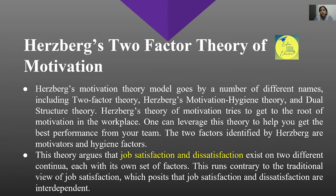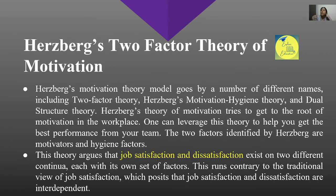This theory argues that job satisfaction and dissatisfaction exist on two different continua, each with its own set of factors. Generally, we think that satisfaction and dissatisfaction are at opposite ends of one spectrum — either satisfied or dissatisfied. But Herzberg said no: job satisfaction and job dissatisfaction are different things, both existing on separate continua, with different factors influencing each. This is contrary to the traditional view that job satisfaction and dissatisfaction are interdependent.